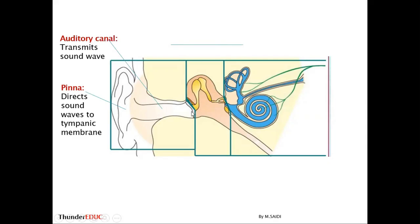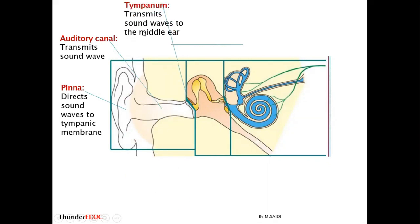The tympanic membrane transmits sound vibration to the middle ear. When the sound wave hits the tympanic membrane, it vibrates — like beating a drum when you beat it and it vibrates. This causes the three ossicle bones to change position, transmitting the sound in the form of vibration.